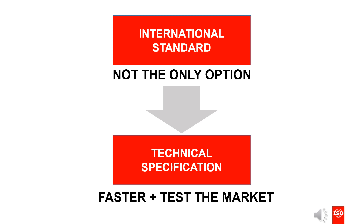There are numerous factors a committee has to consider when deciding to develop a PAS, a TS, or an IS. Sometimes new projects can benefit from starting as a lower consensus deliverable such as a technical specification, especially in cases where a proposal is new to the market, the industry is not yet ready for a full international standard, or there is an urgent market need. Seeking consensus from just the committee members allows a project to be published more quickly. There are also times when projects intended to become international standards face many challenges to reach satisfactory consensus during the development phase. Changing the deliverable from an international standard to a technical specification is a handy option to ensure a committee's project gets published. This allows the market to test the new publication, and normally after six years, the TS can be reviewed and possibly converted into an international standard or be withdrawn.